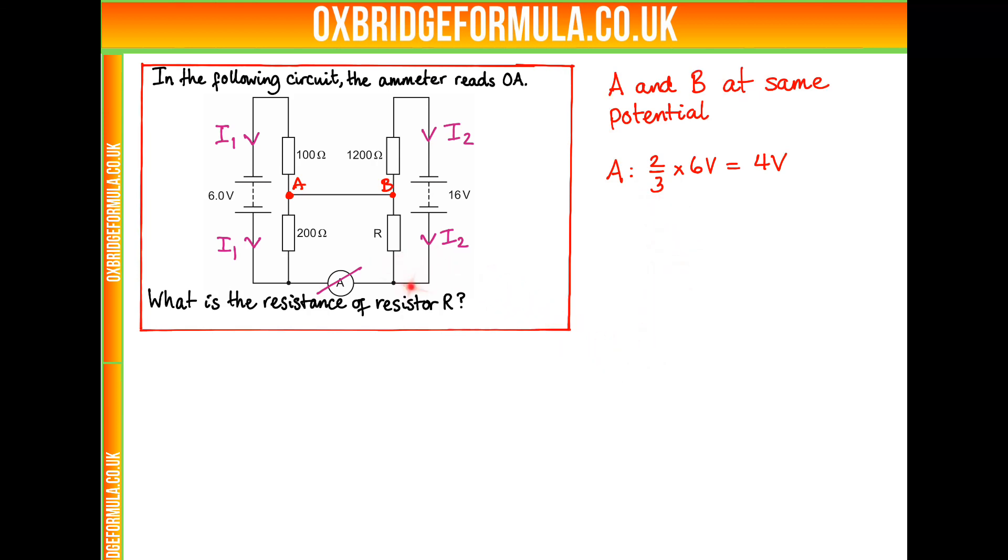So this must mean that B and this bottom part, this potential difference, is also four volts. We can see that these four volts is a quarter of the total battery emf 16 volts. So if this is a quarter of the total EMF, there must be a quarter of the total resistance.